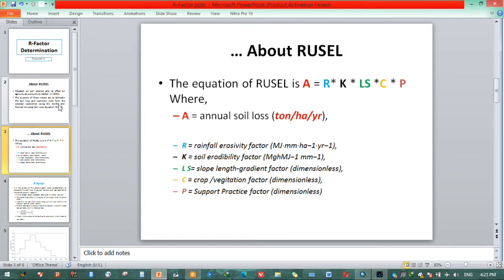This equation involves around 5 input parameters. The first one is rainfall erosivity factor. The second one is soil erodibility factor. And the third one is slope length gradient factor. And the fourth one is crop or vegetation factor. And the fifth one is supporting practice factor. The LS, C and P are dimensionless factors.